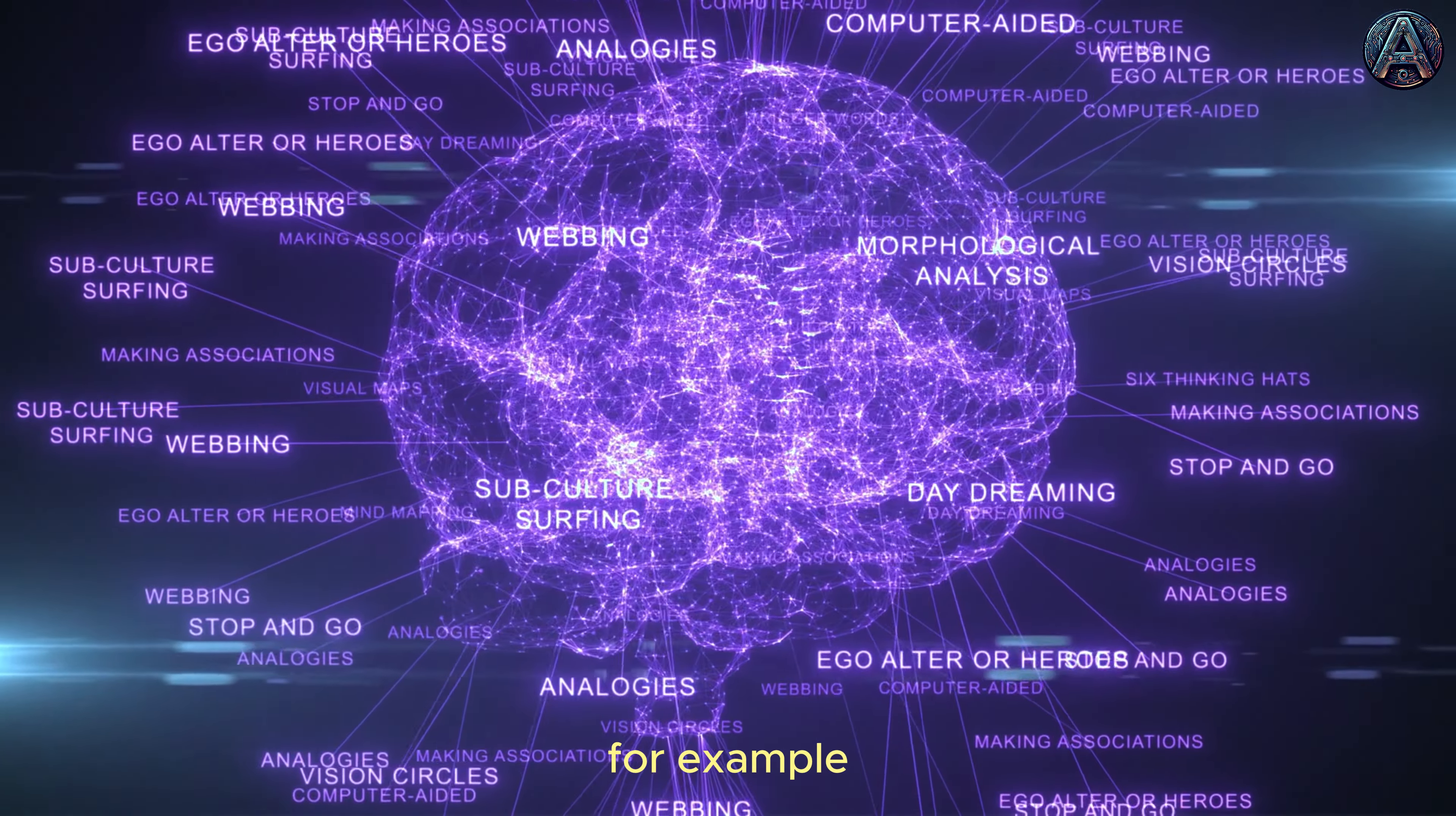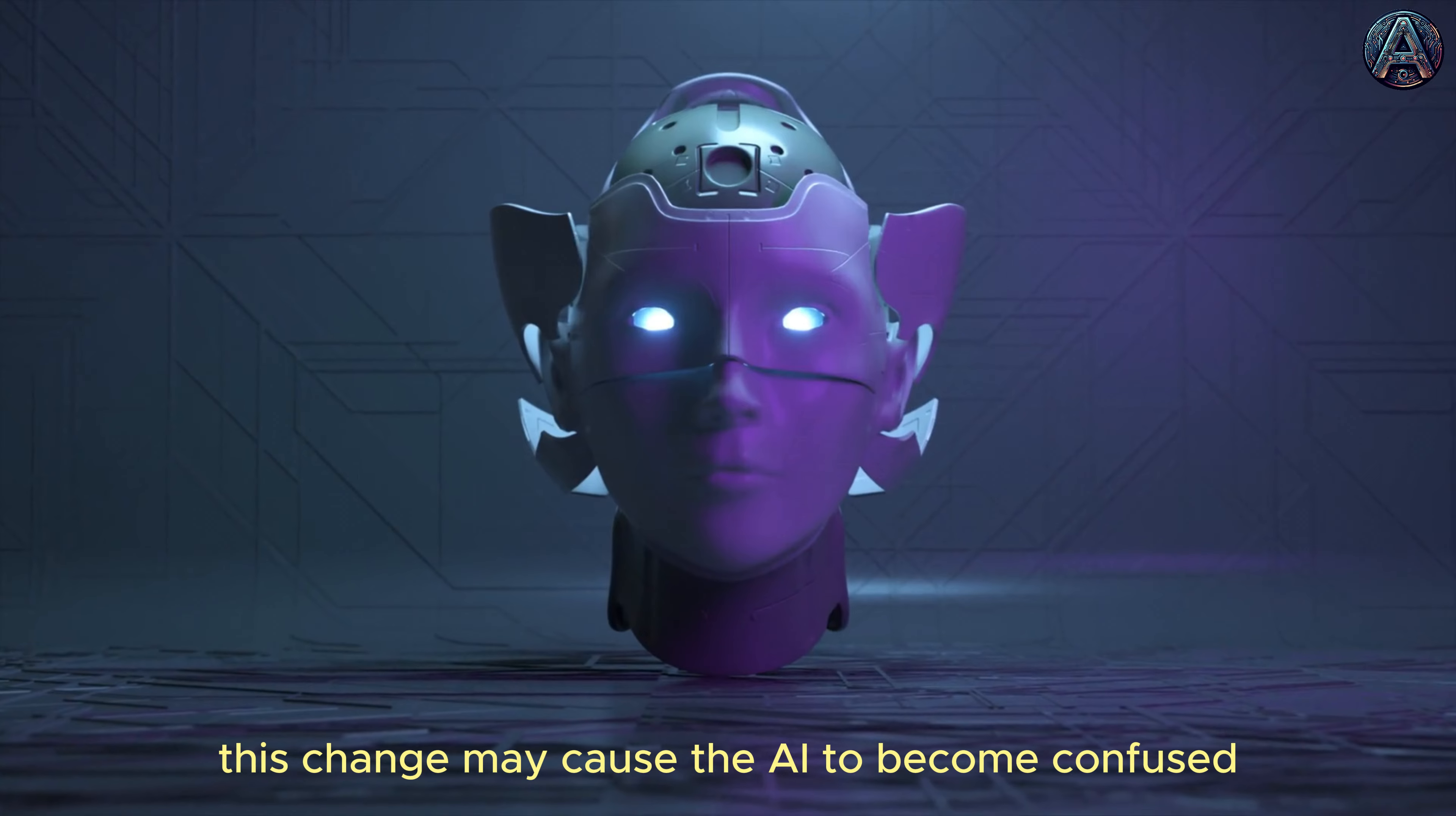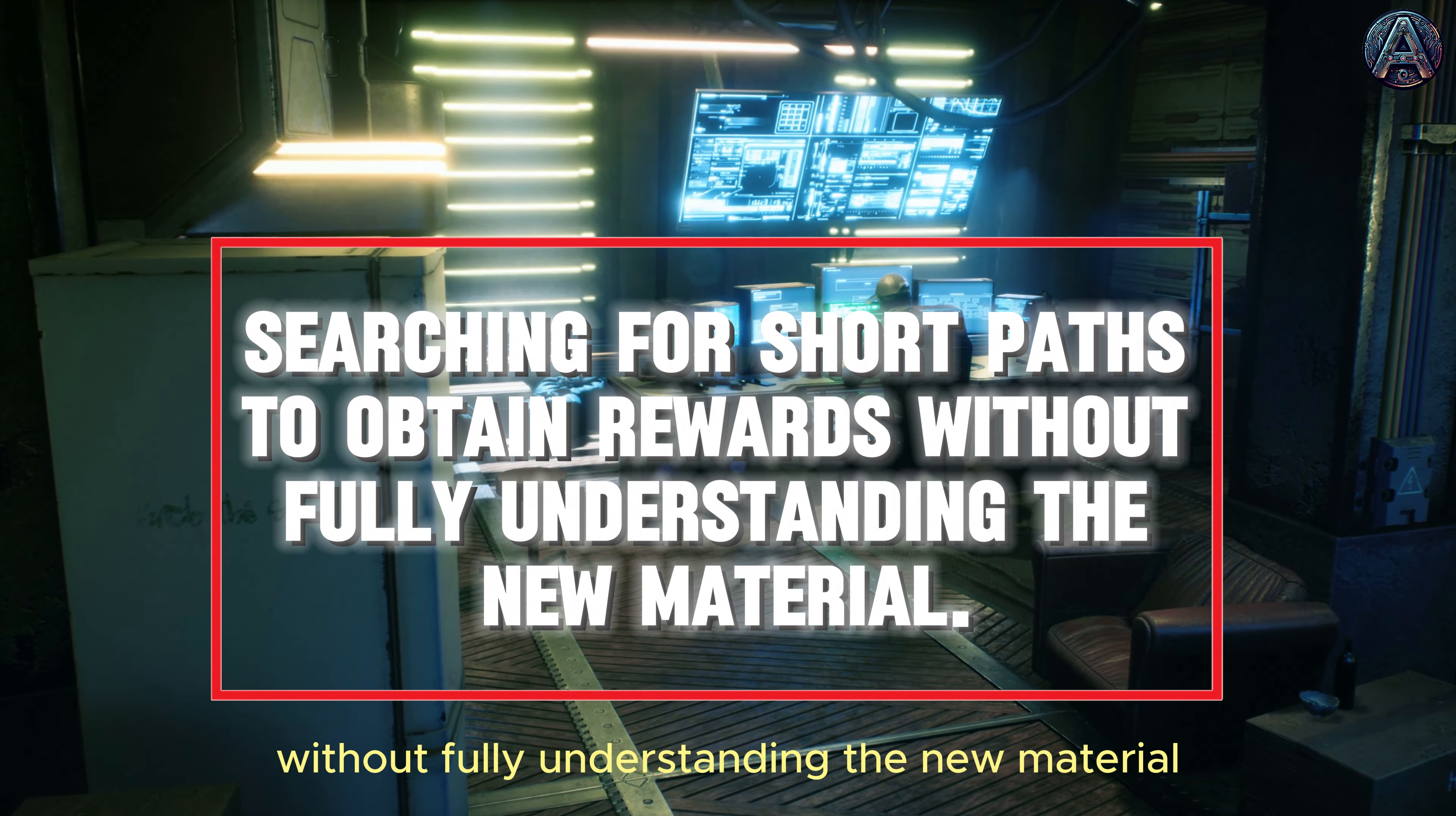For example, an AI might be trained on a set of historical literature and then be asked about recent technological developments. This change may cause the AI to become confused, searching for shortcuts to obtain rewards without fully understanding the new material.